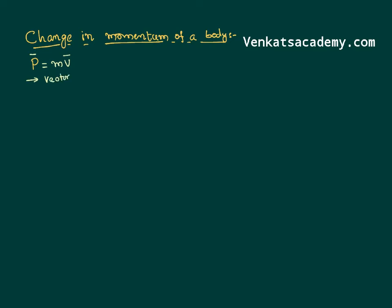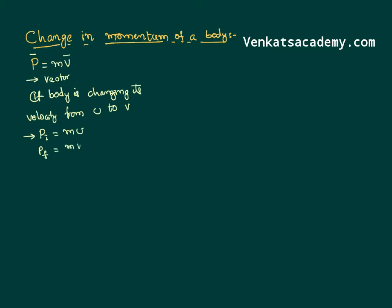A vector quantity has both magnitude as well as direction, and it obeys the rules of vectors. If a body is changing its velocity from u to v, it will have an initial momentum as mass times initial velocity and a final momentum as mass times final velocity. These are all vectors, so we can say change in momentum delta p equals p final minus p initial. P final is mv and p initial is mu, so the change in momentum also has a specific direction.